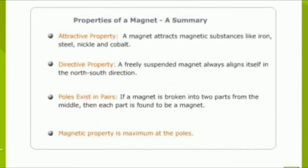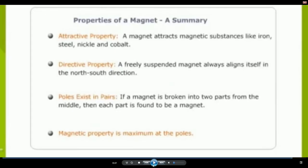In summary, the properties of a magnet are: first, attractive property — a magnet attracts magnetic substances like iron, steel, nickel, and cobalt. Second, directive property — a freely suspended magnet always aligns itself in the north-south direction. Third, poles exist in pairs — if a magnet is broken into two parts from the middle, each part is found to be a magnet. Fourth, magnetic property is maximum at the poles.